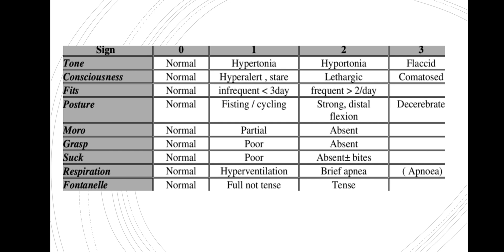Under tone: if it's normal that's a score of 0, if it's hypertonic that's 1, if it's hypotonic that's 2, and if it's flaccid that's 3. For consciousness: if it's normal that's 0, if they are hyperalert or with a stare that's 1, if they are lethargic that's 2, and if they are comatose that's 3.